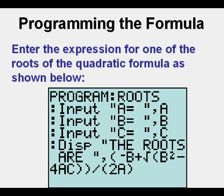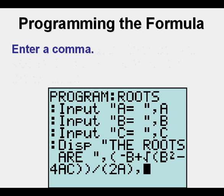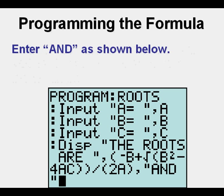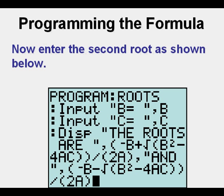Enter the expression for one of the roots in the quadratic formula: open parentheses, negative B, plus square root of B squared minus 4AC, close double parentheses, divide, open parentheses, 2A, close parentheses. Enter a comma, then enter the word AND in quotation marks, then a comma. Enter the second root: open parentheses, negative B, minus square root of B squared minus 4AC, close double parentheses, divide, open parentheses, 2A, close parentheses.